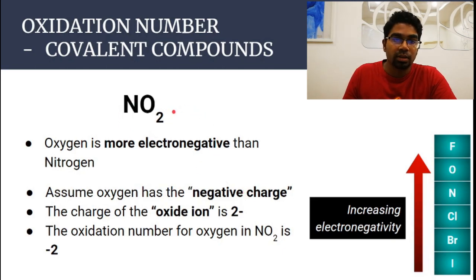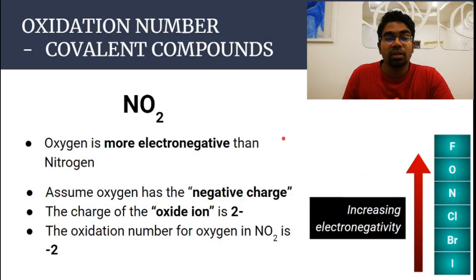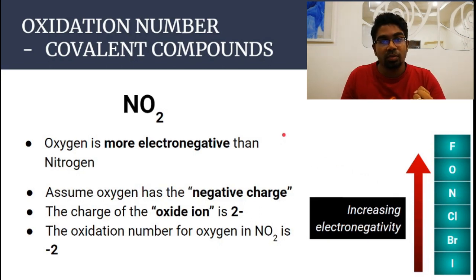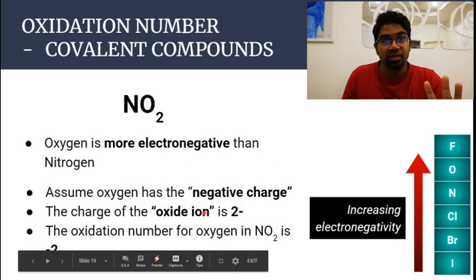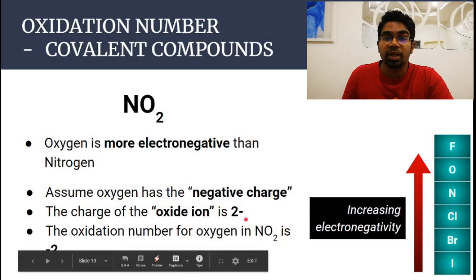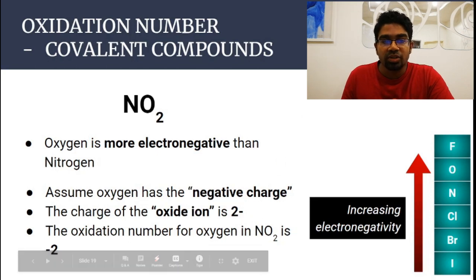Now let's look at another covalent compound: nitrogen dioxide. Same case here — oxygen is more electronegative than nitrogen, so we assume oxygen is the one that has gained the electrons. Oxygen normally gains two electrons, so we assume oxygen has become the oxide ion — in reality it's not, but we assume it is — with a charge of 2−. The oxidation number of oxygen in nitrogen dioxide will be minus two.